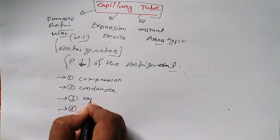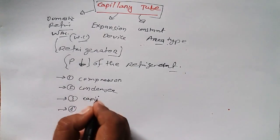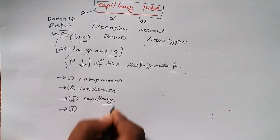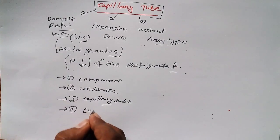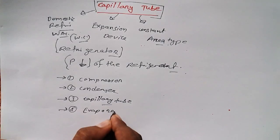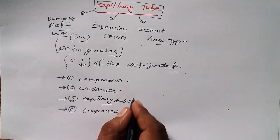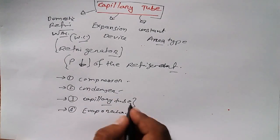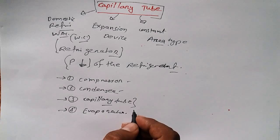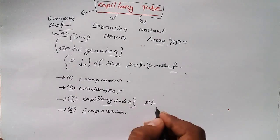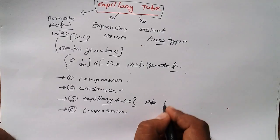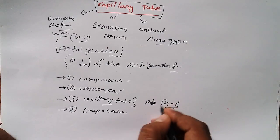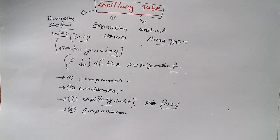We use the capillary tube based on our requirement, and the last device is the evaporator. The working of the capillary tube is decreasing pressure, and in this case we have an isenthalpic process, which means enthalpy remains constant.